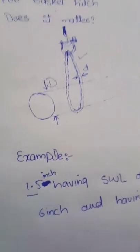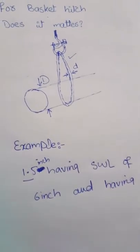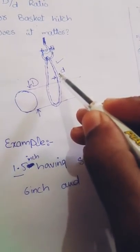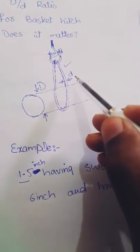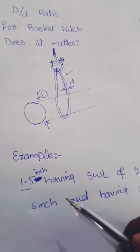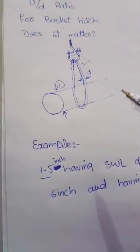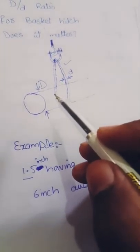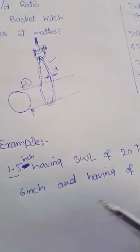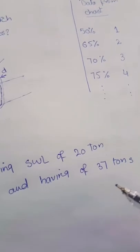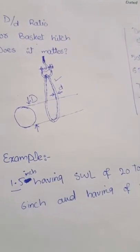D/d ratio: consider example 1.5 inch wire rope. The diameter, small d, for a wire rope is 1.5 inch and having its safe working load of 20 tons. So we are going to lift a pipe having diameter of 6 inch and having 37 tons of load. So for a basket hitch we know that the capacity of the sling is doubled.